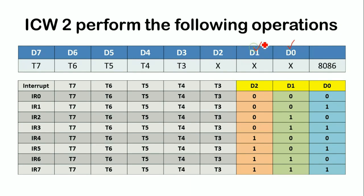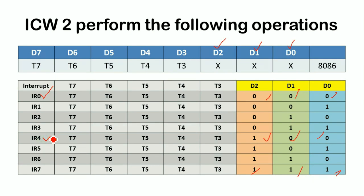We write bits D0 to D7 as shown in the table. Bits D0, D1, and D2 vary from 000 to 111. For example, D0, D1, D2 as 0, 0, 0 is for interrupt line IR0, and 1, 0, 0 is the type number for interrupt line IR4. Like that, we can use ICW2 to associate type numbers with each interrupt line.